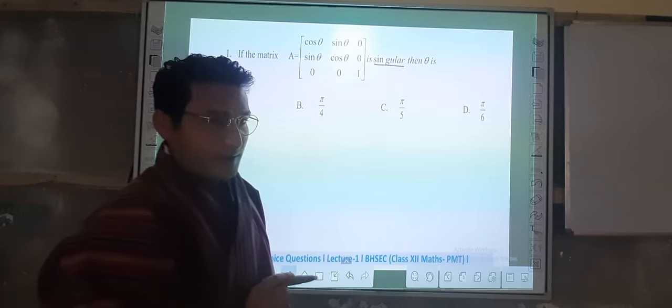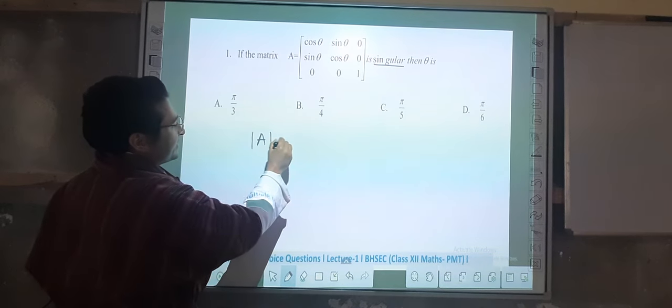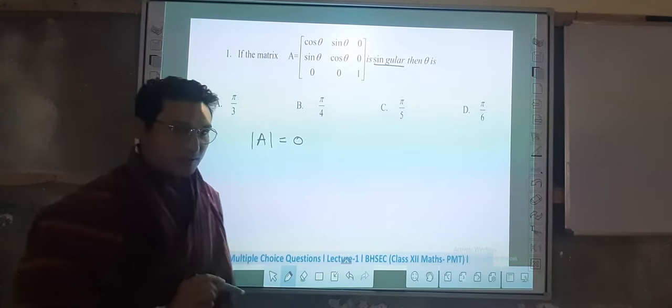So here we are given with four options. Now the given matrix is said to be singular if the determinant of that given matrix is equal to zero.